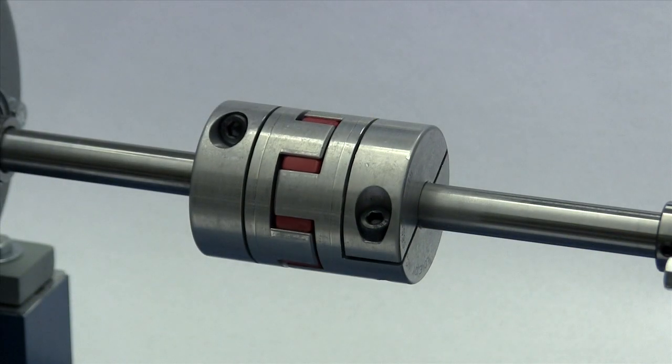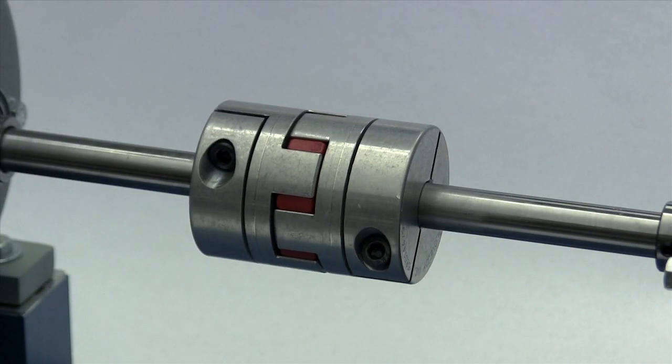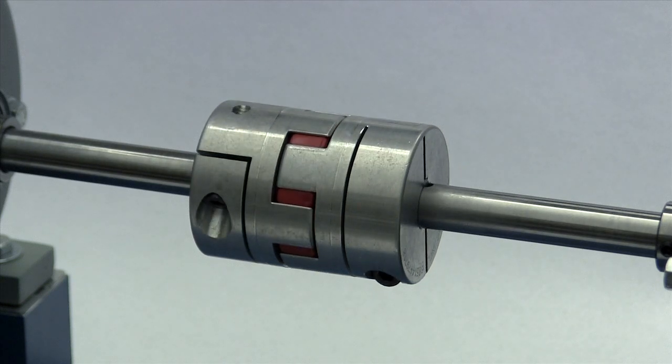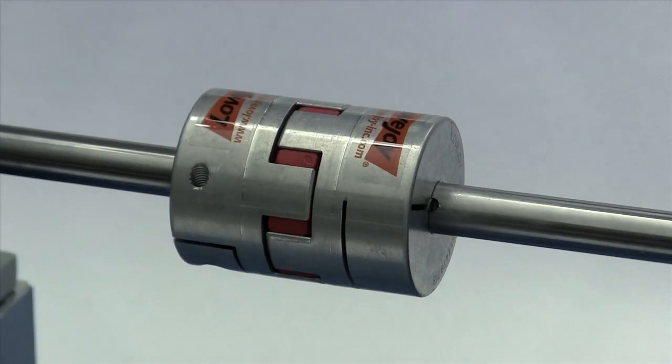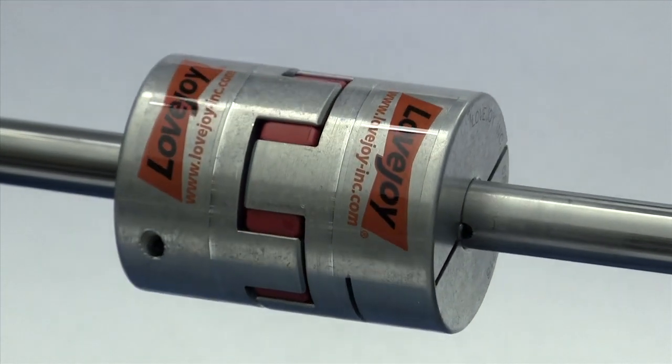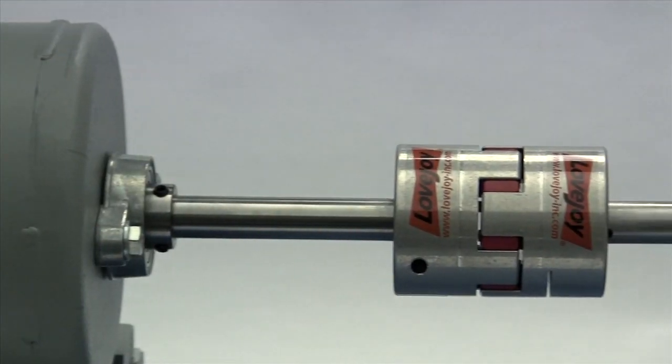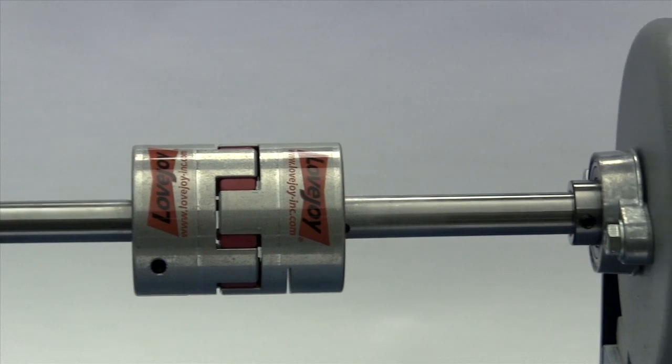When the installation is complete and the equipment is aligned to meet specifications, remove tooling and material away from the shafting and coupling. Double check the tightness of any screws or fasteners with a calibrated torque wrench, then prepare for testing.